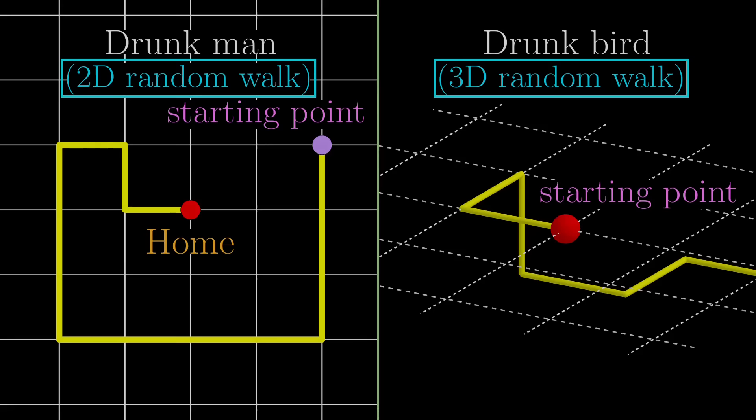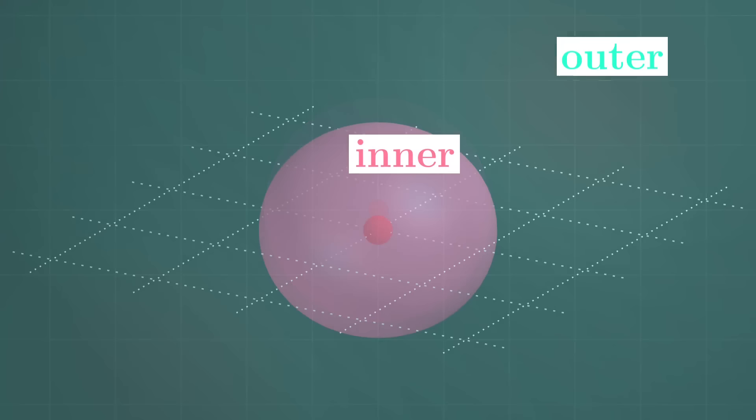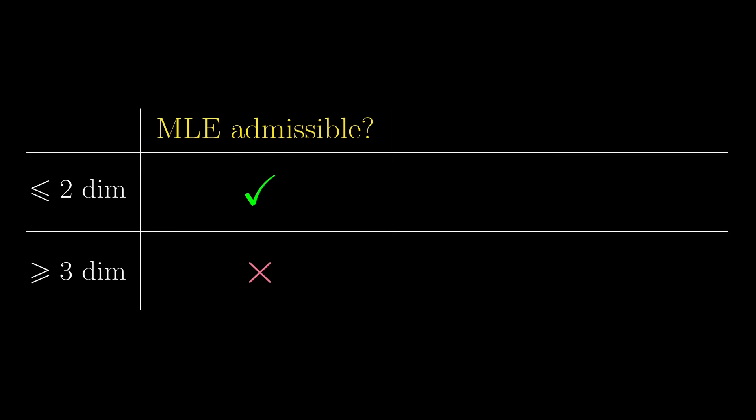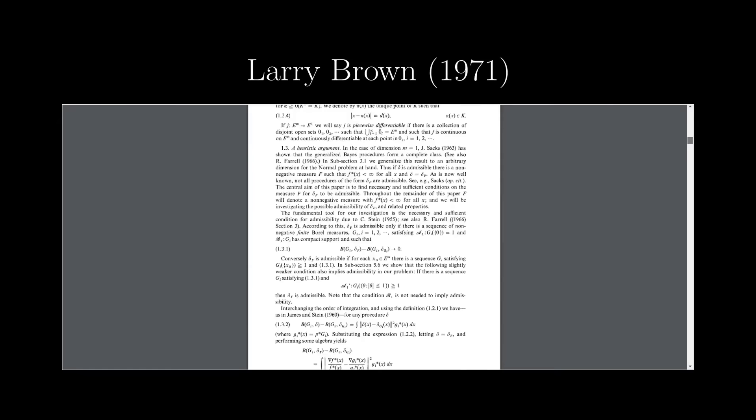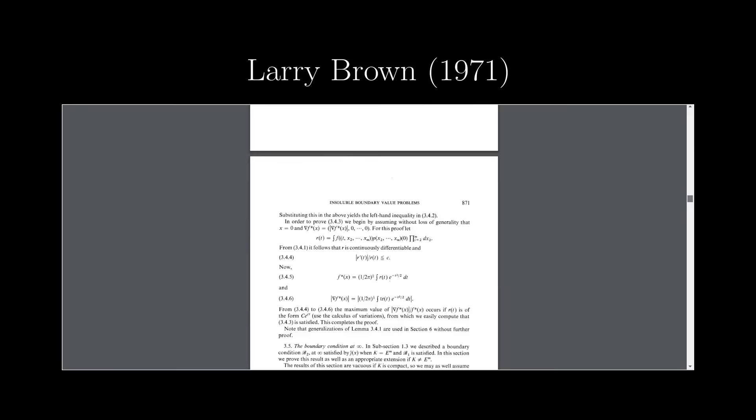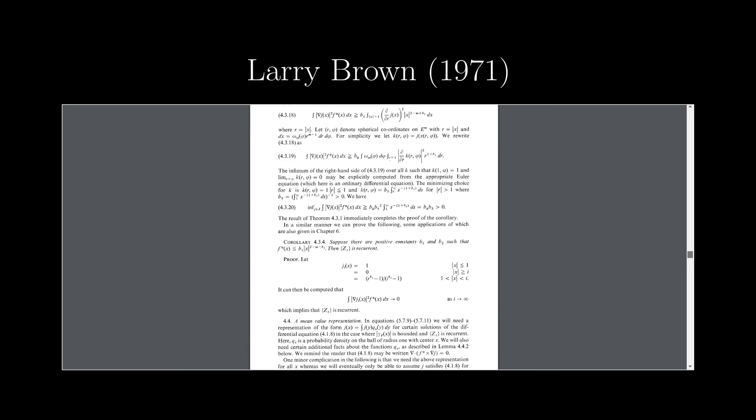However, does this inner outer region explanation and the cutoff between 2 and 3 dimensions look familiar? If you have watched my previous video on Stein's paradox, then you might remember that whether the ordinary estimator is admissible has a cutoff between 2 and 3 dimensions, and we found out that recurrence of random walks also has the same cutoff. It turns out that this is not a coincidence. Larry Brown wrote in 1971 about the connection between these two problems, but this is way too involved for a YouTube video. I will put a link in the description for those who want to know more.